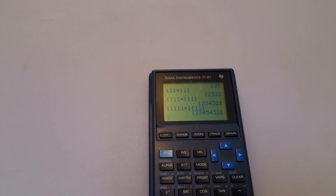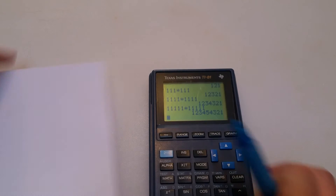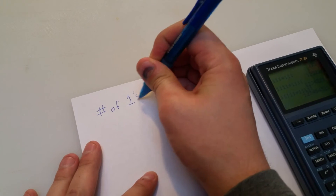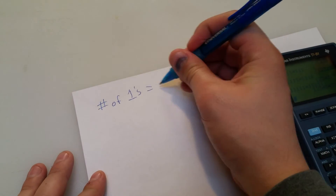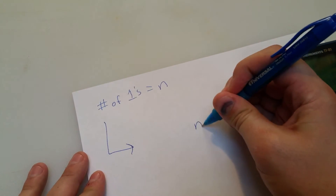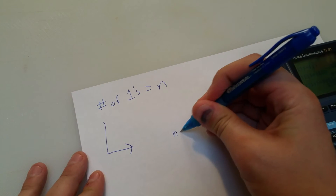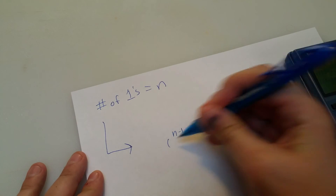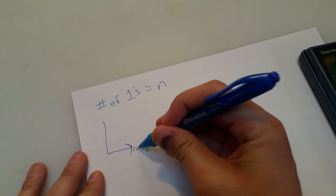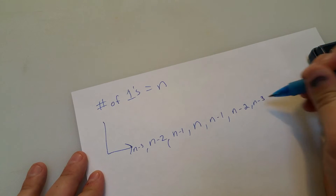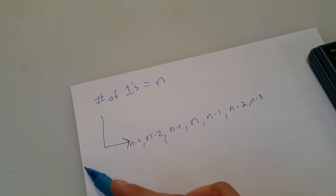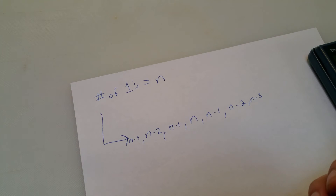The rule going on here is: you take the number of 1's that you have — let's say it equals n — and that gives us a product where it's n in the middle. On the left side it goes n minus 1, then n minus 2, n minus 3, and so on, trailing all the way down to 0.